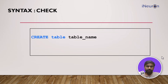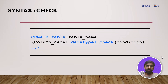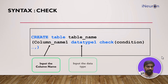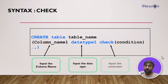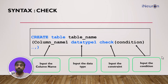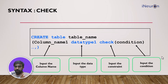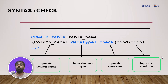Let's see the syntax — it's pretty simple. Create table, table name, go for the column name, go for the data type of the column name, and then input the constraint called CHECK. Then in parentheses, input the condition which you want to check for that particular column. Let's see this in SQL.